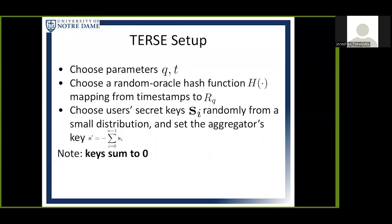With this background, I can now describe TERSE in terms of the three algorithms. First, setup. The most important parts are choosing parameters q, the ciphertext modulus, and t, the plaintext space parameter, in a way that allows aggregation on user data from whatever domain you're dealing with. We also choose a random oracle hash function h that maps from timestamps to R_Q. Most importantly, we choose user secret keys randomly from a small distribution, and we set the aggregator's key such that we have an additive key correlation where they all sum to zero.